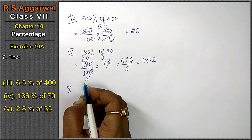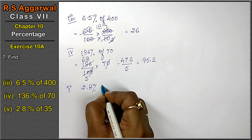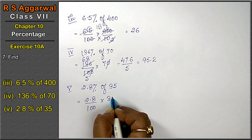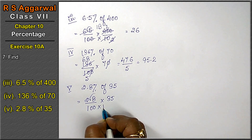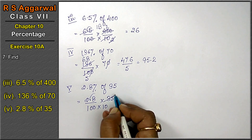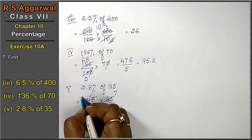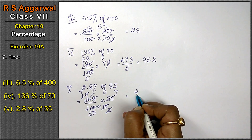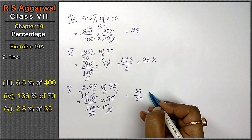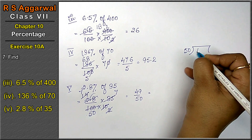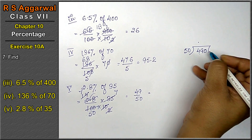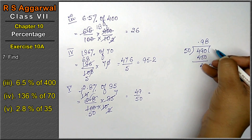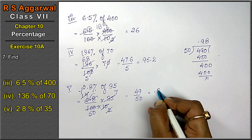Next part is 2.8 percent of 35. 2.8 percent means 2.8 upon 100 multiplied by 35. We remove the decimal point and multiply by 10 below. 5×7 is 35, 5×2 is 10, 2×1 is 2, 2×1 is 2, giving 4, and 2×7 is 14 — total 50. Now the answer will be 49, with the decimal point placed, 0 carried forward. 5×8 is 40, 0 as it is. That means 0.98 is the answer.